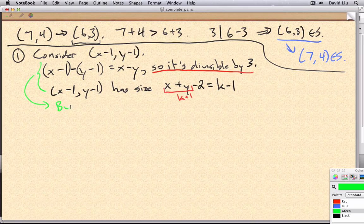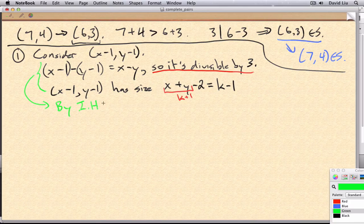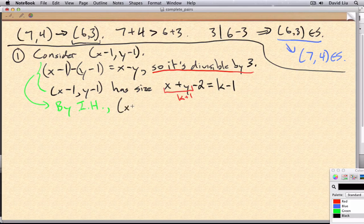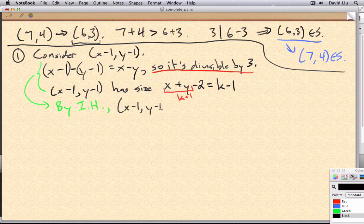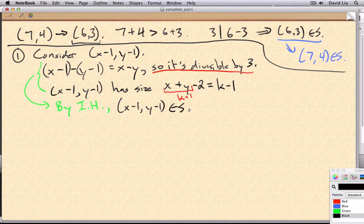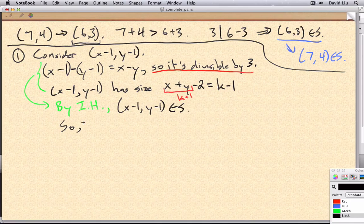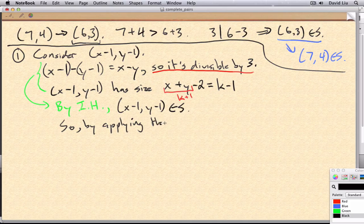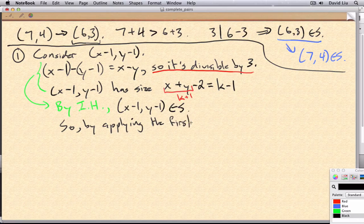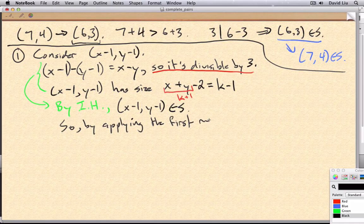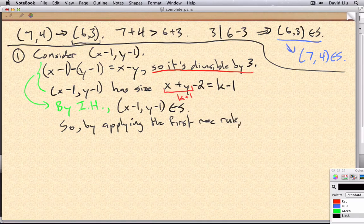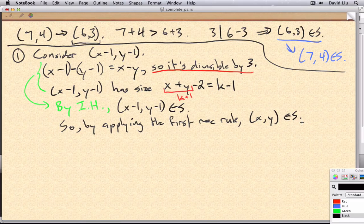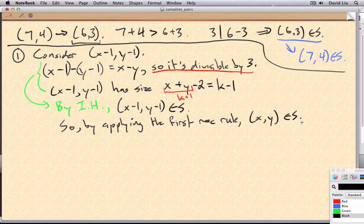imply that we can use the induction hypothesis, which tells us that x minus 1, y minus 1 is in s. And so by applying the first recursive rule, x,y is also in s. And we've achieved what we wanted to prove.